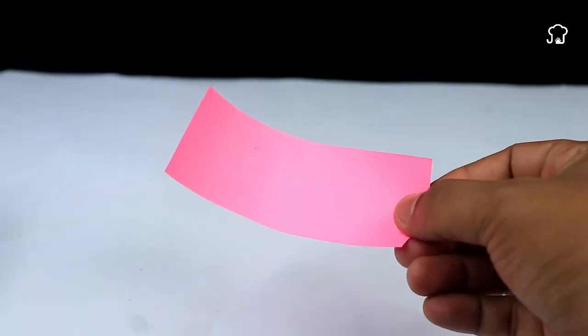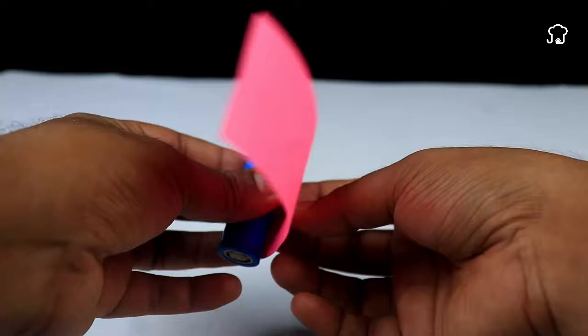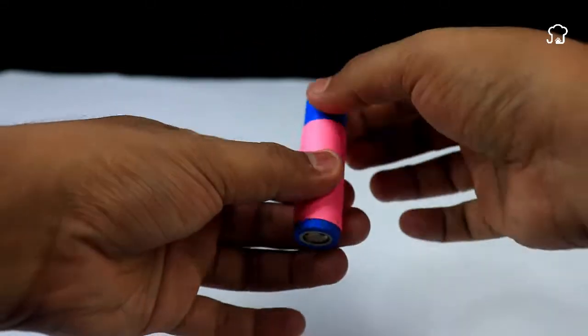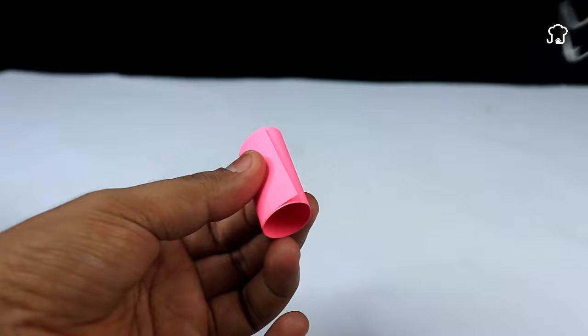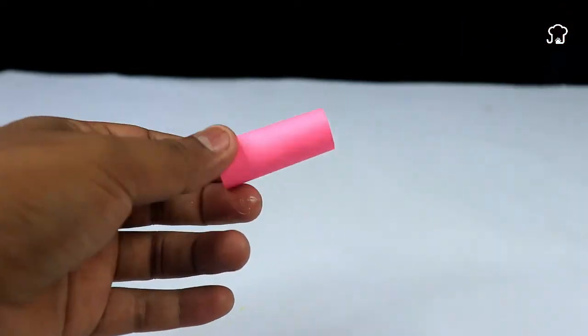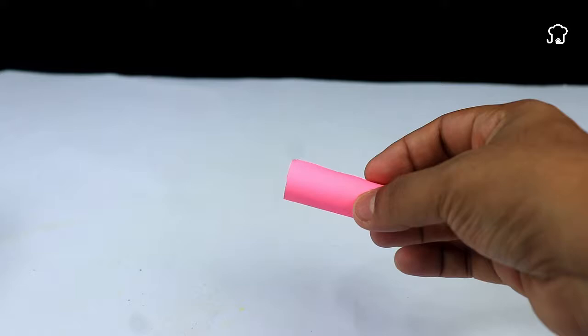Next, we will wrap a piece of cardboard around a battery to form a cylinder. We remove the battery and glue the edges of the cardboard with hot silicone to maintain the cylindrical shape. This cylinder will serve as a support for the copper wire.